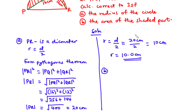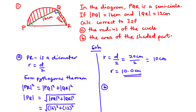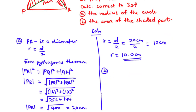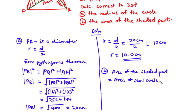Now let's solve part b — the area of the shaded part. We are going to find the area of the semicircle and then subtract the area of the triangle from that to get the area of the shaded part. The area of the shaded part equals the area of the semicircle minus the area of the triangle. The area of the semicircle is half times pi r squared.